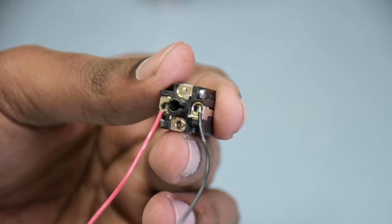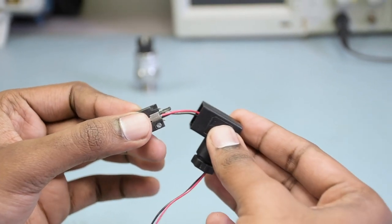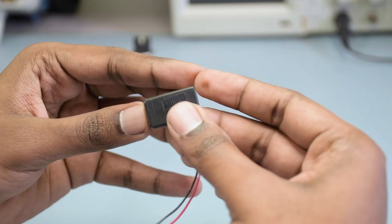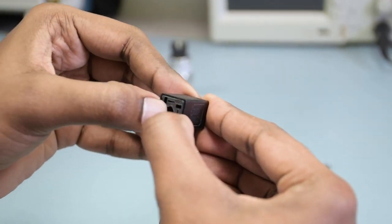Once you have the red and the black connected, just put that little terminal block assembly back into the DIN cap like so. Apply a little bit of pressure and you'll hear it pop.